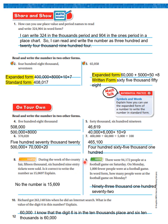Number nine: there were ninety-four thousand one hundred and seventy-two people at the football game on Saturday. On Monday, one thousand fewer people were at the game. In word form, how many were there on Monday? It would be ninety-three thousand one hundred and seventy-two, because that is one thousand less. Number ten: Richard got 263,148 hits in an Internet search. The value of the digit six is sixty thousand — because the digit six is in the ten-thousands place, and six ten-thousands equals sixty thousand.